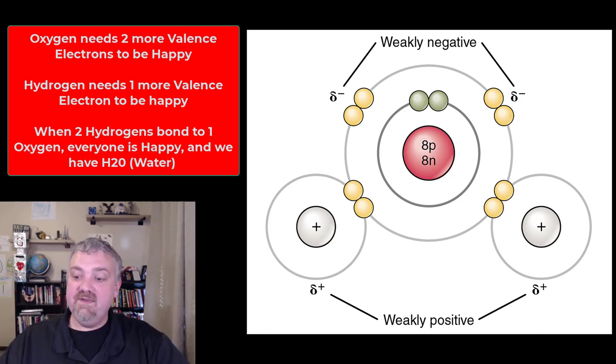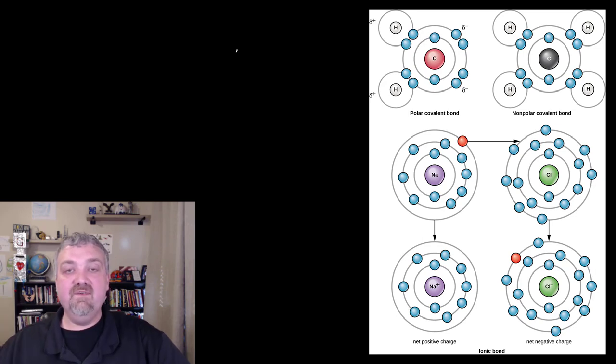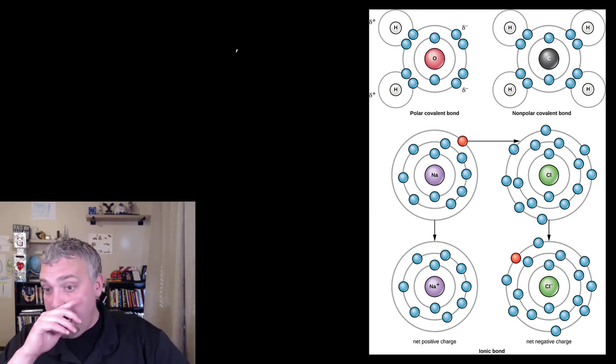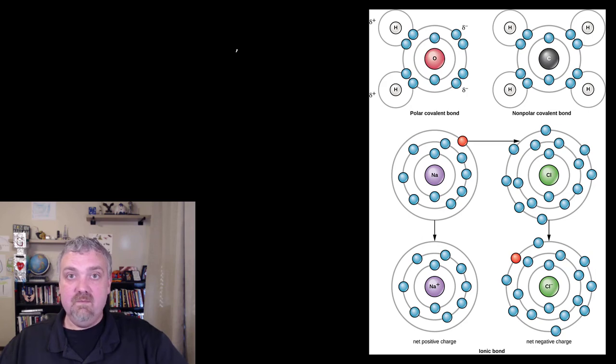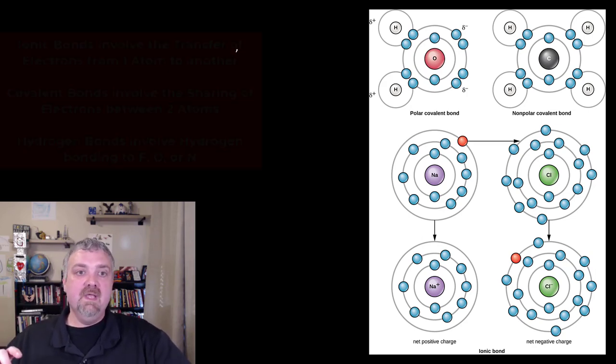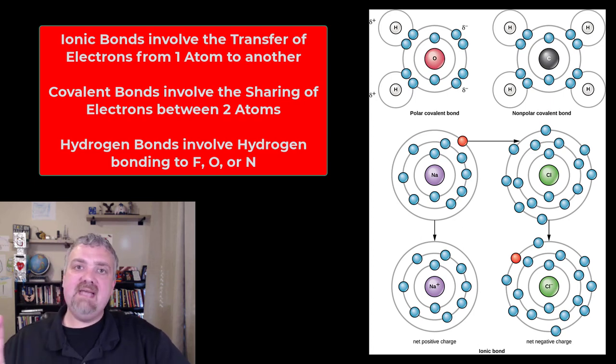But everyone trying to be happy, every atom trying to fill its outer shell by either gaining, losing, or sharing electrons is going to lead to different bond types here. So the three basic types of bonds you're going to see are ionic bonds, covalent bonds, and hydrogen bonds. Now you'll see up on the top here two types of covalent bonds. I will cover them separately.